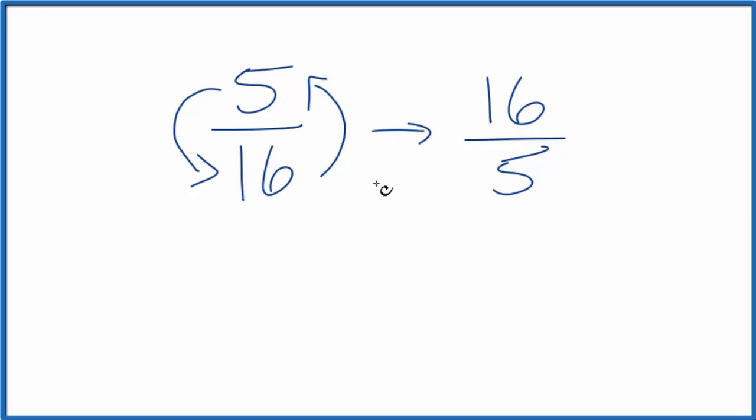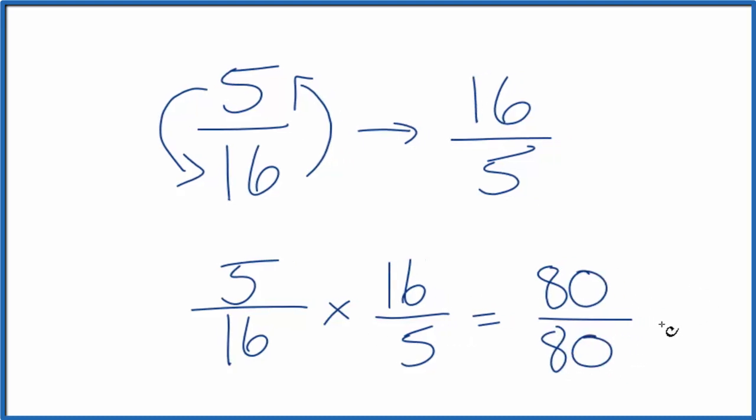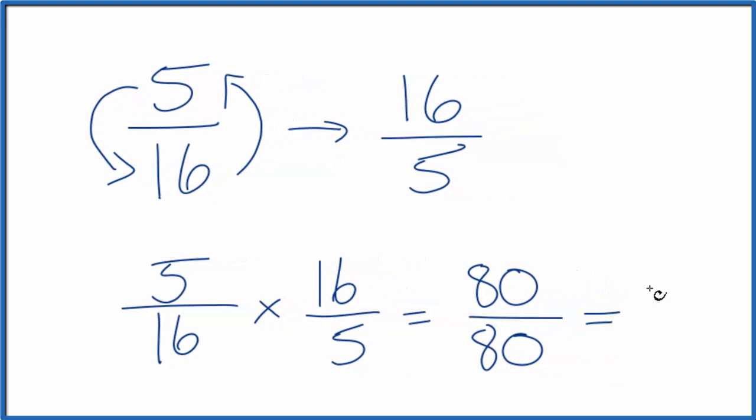And we can check our work here. We could take the original fraction, 5 16ths, and multiply that by its reciprocal, 16 fifths. And it should equal 1 if we did it correctly. 5 times 16, that is 80. And 16 times 5 is also 80. 80 divided by 80, that equals 1. So we did this first part correctly.